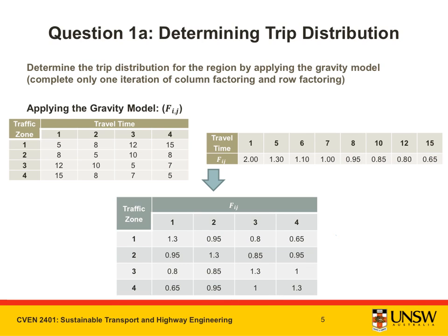Next, we need to convert the travel time matrix into a friction factor matrix. This is normally done using a function of travel time, which is described in the table on the right. For example, all the trips with a travel time of 1 have a friction factor of 2. Looking at our travel time matrix on the left, there are no trips with a travel time of 1. We know that all the trips with a travel time of 5 have a friction factor of 1.30 — this means that all intrazonal trips have a friction factor of 1.30. We populate the friction factor matrix accordingly, then continue the process until our matrix is fully populated.